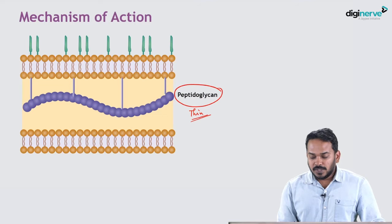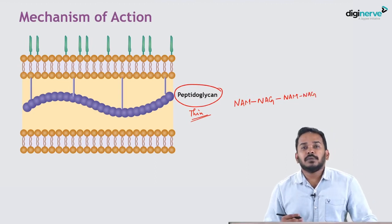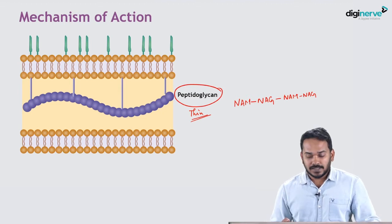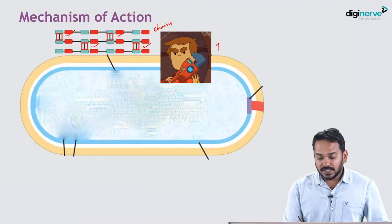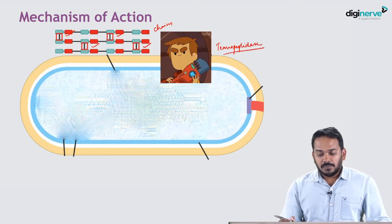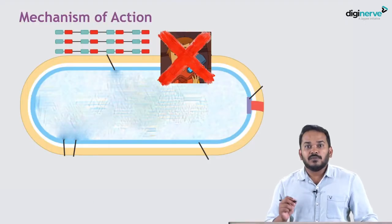This peptidoglycan is synthesized inside the bacteria as individual units — N-acetylmuramic acid and N-acetylglucosamine. These will link together to form long chains which will be transported out of the bacterial cell. These chains will be linked to each other with the help of an enzyme called transpeptidase. Beta-lactam antibiotics inhibit this transpeptidase enzyme so that linking between the chains will not happen.